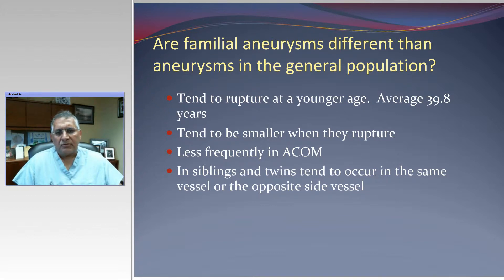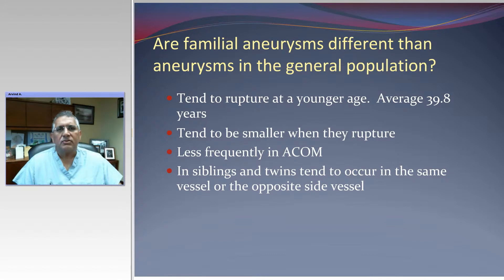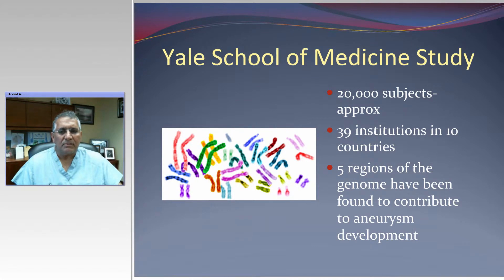Family aneurysms are different from aneurysms in the general population. They tend to rupture at a younger age — the average age of 39.8 years. They tend to be smaller when they rupture, and less frequently occur in the anterior communicating artery area. Siblings and twins tend to have aneurysms in the same vessel or opposite vessels. So it's remarkable that aneurysms occur in the same area and rupture faster, indicating a clear genetic factor causing weakening of the blood vessel.